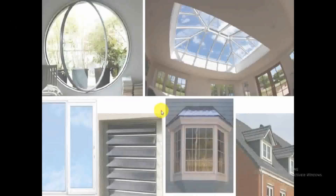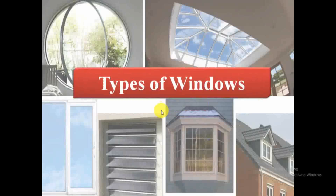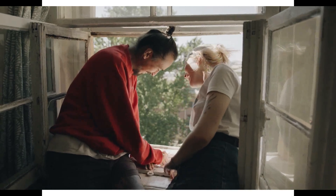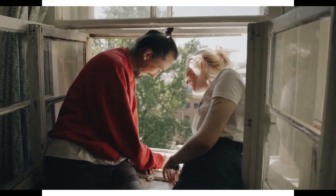Hey, welcome to Decent T&C. I am Jean Marie. Today we are going to see different types of windows. On any building to be constructed, there has to be some openings. Among them we saw doors and windows. Windows will be used for the purposes of ventilation, and admission of light and fresh air in the building.